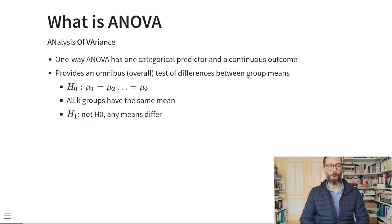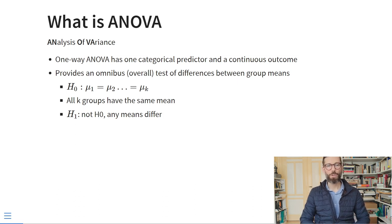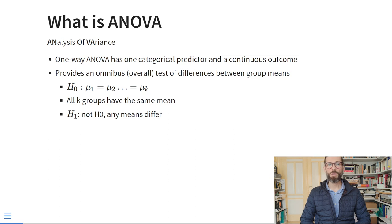Welcome back to this lecture series about the General Linear Model. Today we continue with another advanced topic, which is Advanced Analysis of Variance or ANOVA. Let's recap our knowledge of ANOVA. ANOVA stands for Analysis of Variance. A one-way ANOVA has one categorical predictor and a continuous outcome, and provides us with an overall test of any differences between group means. This is also called an omnibus test.